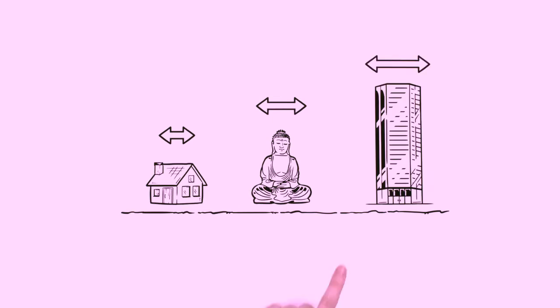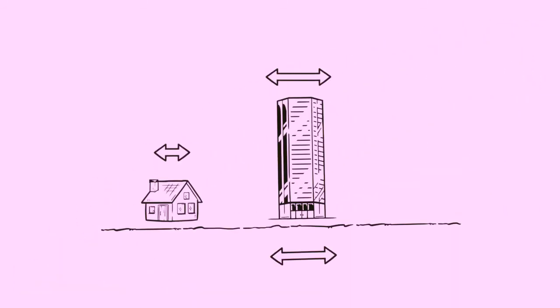Each building has its own period, which depends on the type of construction and height. Higher buildings have longer periods, and these are more likely to be the same as the ground motion. When a building's period is the same as that of the ground, this causes resonance, which greatly magnifies the shaking.